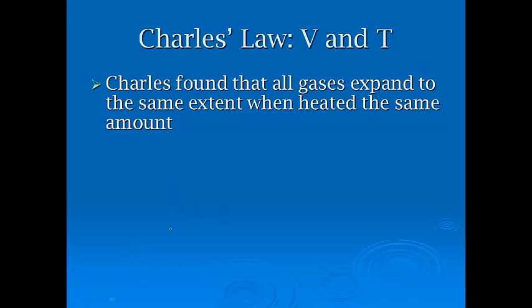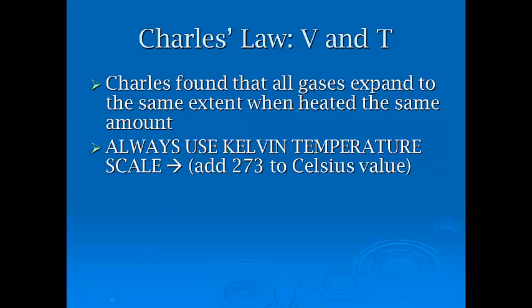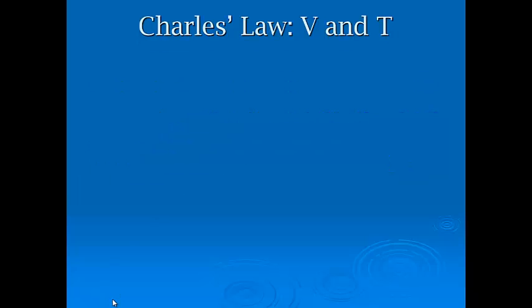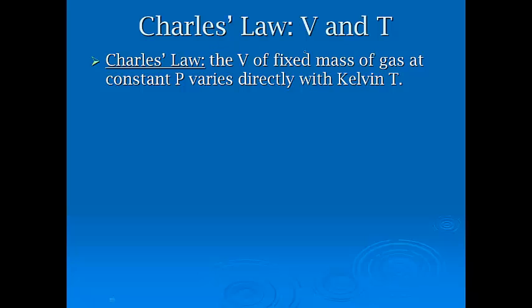Now, Charles found that all gases expand to the same extent when heated the same amount. And you always, whenever we do gas laws problems, this is really important, you always use Kelvin temperature scale. Okay, this is so we don't have any negative numbers. And all you have to do is, if you're given Celsius, you just simply add 273 to that Celsius value. So, for Charles' Law, the volume of a fixed mass of gas at constant pressure varies directly with Kelvin temperature. Okay, so volume and temperature are directly related. And then the equation this time is going to be V1 over T1 equals V2 over T2.